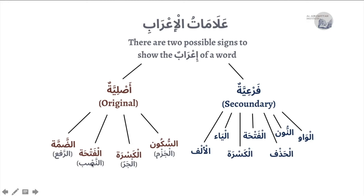For example: 'Muhammadun' (Raf'), 'Muhammadan' (Nasb), 'Muhammadin' (Jarr), and the Sukun for Jazm — 'Lam Yadhhab'. Those are the original signs. We also have secondary signs (A'lamat Fara'iya): certain words will not take the original signs but instead take one of the secondary signs, such as the Alif, the Ya, the Kasra, the Fathah, the Hadhf, the Nun, or the Waw.